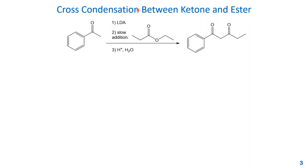Now let's talk about cross-condensation between a ketone and an ester. Technically you cannot call this Claisen condensation, but it is a very similar reaction. In this example, we have the ketone methylphenyl ketone reacting with LDA to generate the enolate first. Then in the second step we slowly add the ethyl ester, again to reduce side reactions. The third step requires quenching the enolate with acid. The product is a 1,3-diketone.